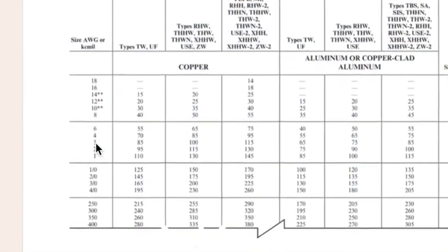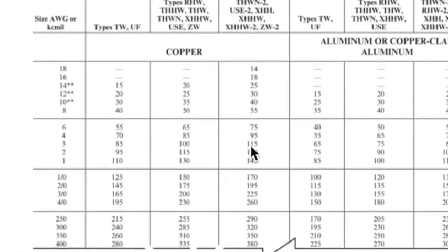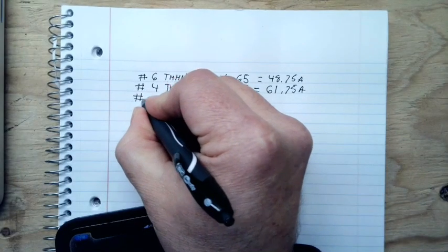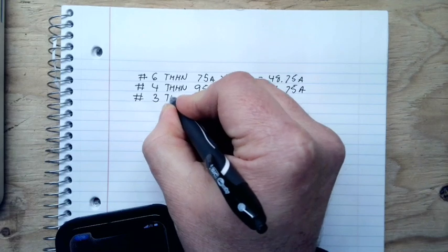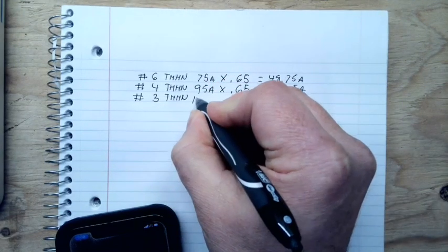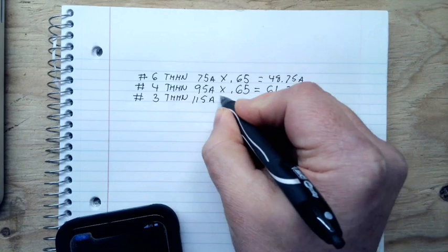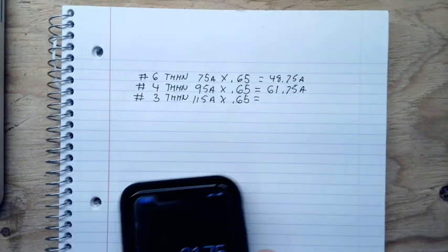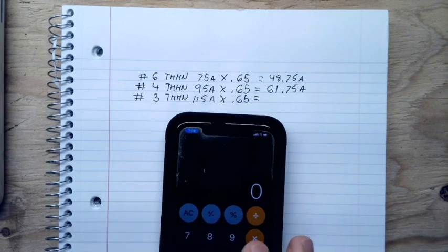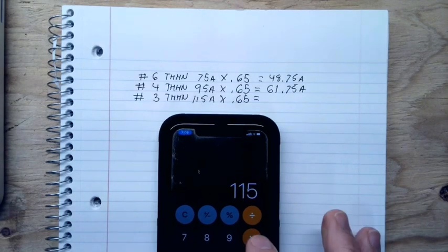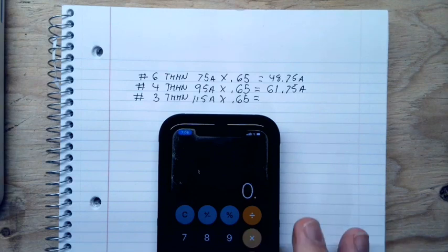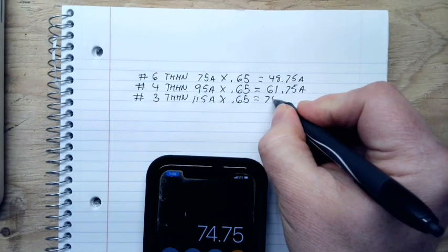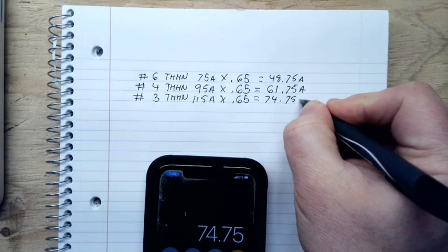Now I'm going to go to a number 3, which is good to 115 amps. So I'll write number 3, THHN, is good to 115 amps times the same correction factor of 0.65. And I'm going to go 115 times 0.65 is equal to 74.75, 74.75 amps.